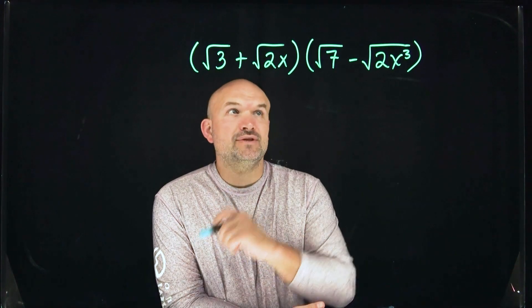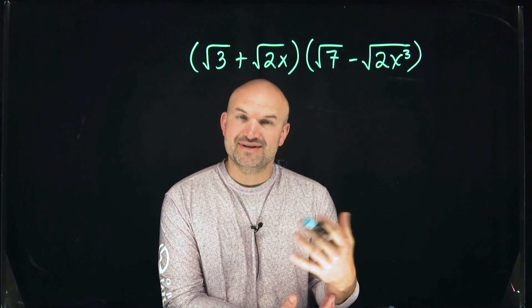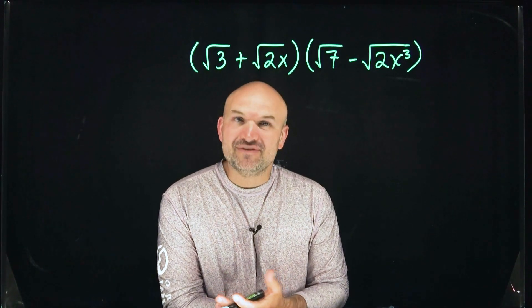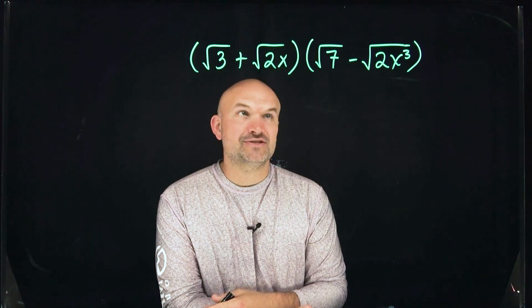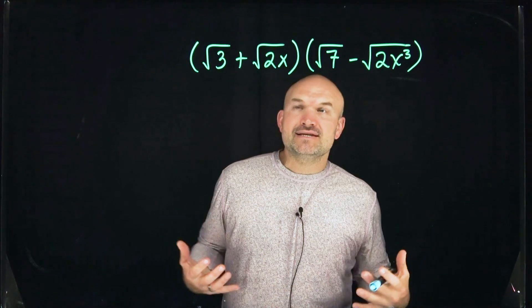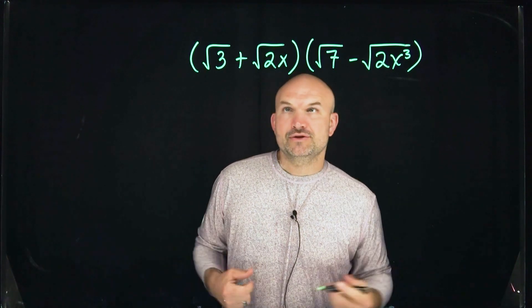So what I like about this problem is not only are we going to practice being able to multiply two binomials with radicals, we're also going to get some practice of simplifying our radical expressions. So that all comes into applying the operation and then simplifying. So this is a great review to kind of go over a couple things that we need to make sure we know how to do.